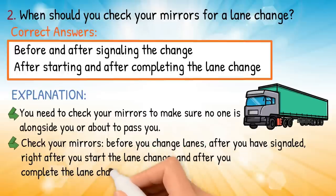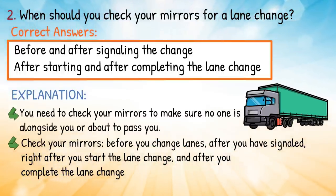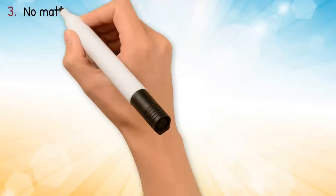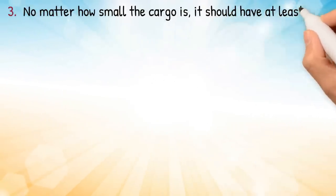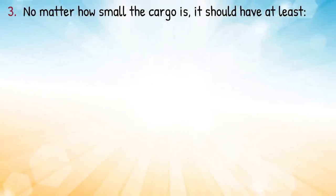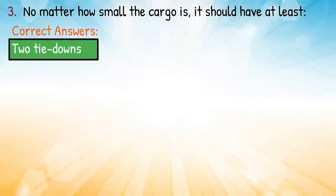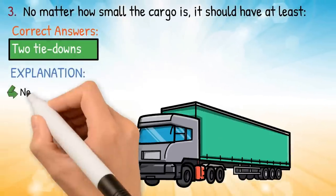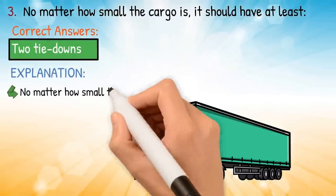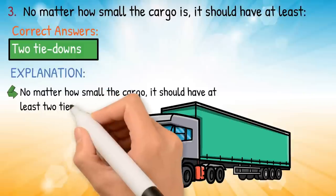And after you complete the lane change. Question three: no matter how small the cargo is, it should have at least — correct answer: two tie-downs. Explanation: no matter how small the cargo, it should have at least two tie-downs.